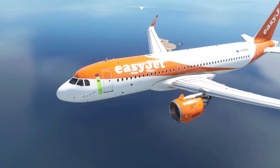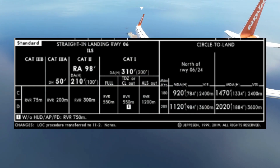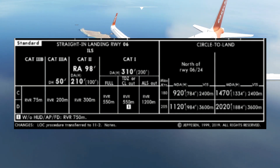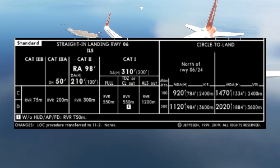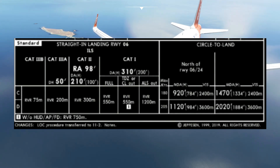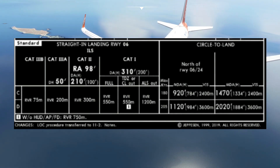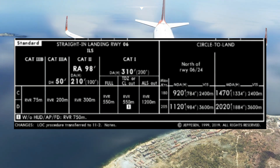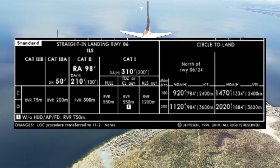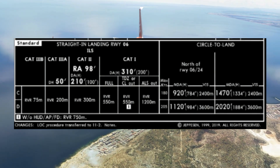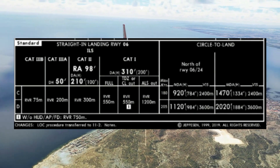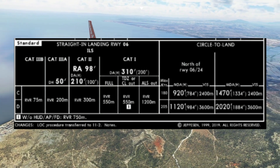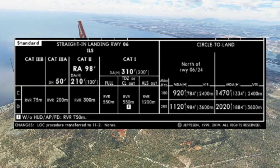We're going to start by having a look at this runway. This is runway 06 for Edinburgh, and as you can see at the bottom here, runway 06 has an ILS Category 1, Category 2, Category 3A, and Category 3B. Many of you will know that because of the Category 3A and 3B on this chart, it means that yes, this runway is capable of having you perform an Autoland.